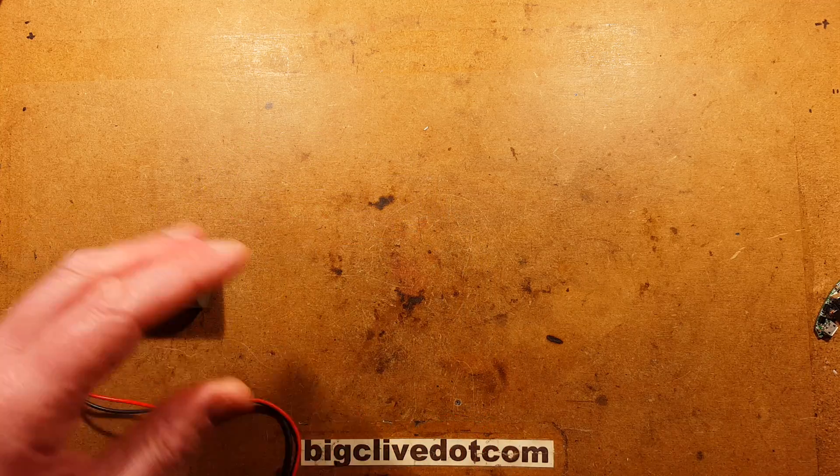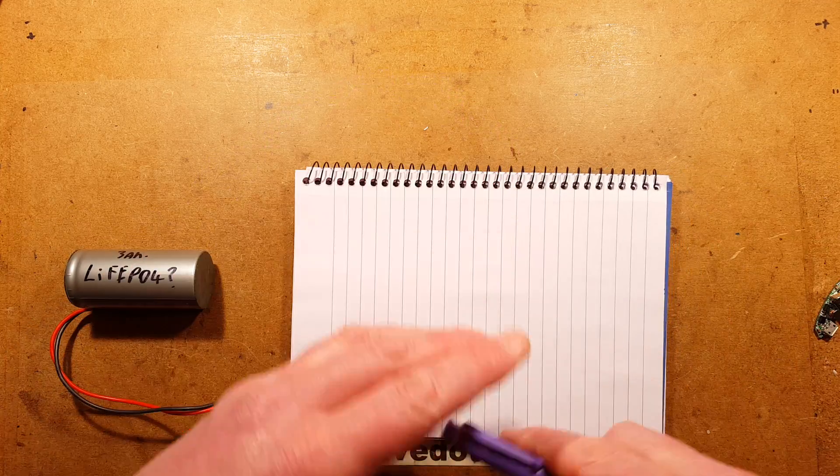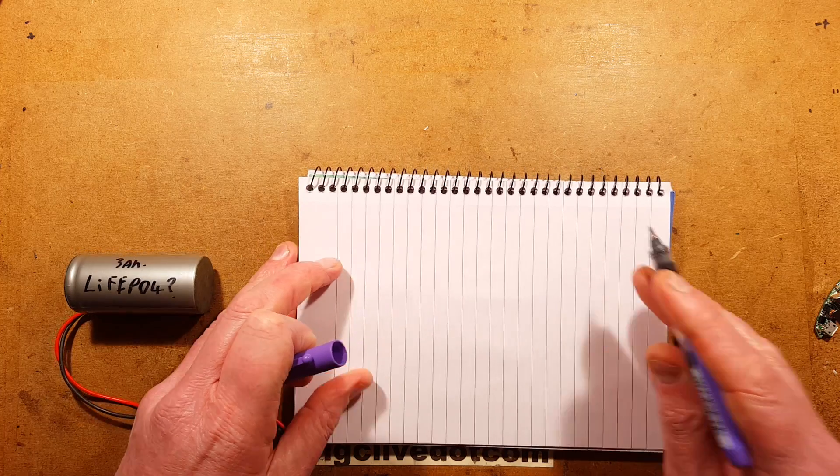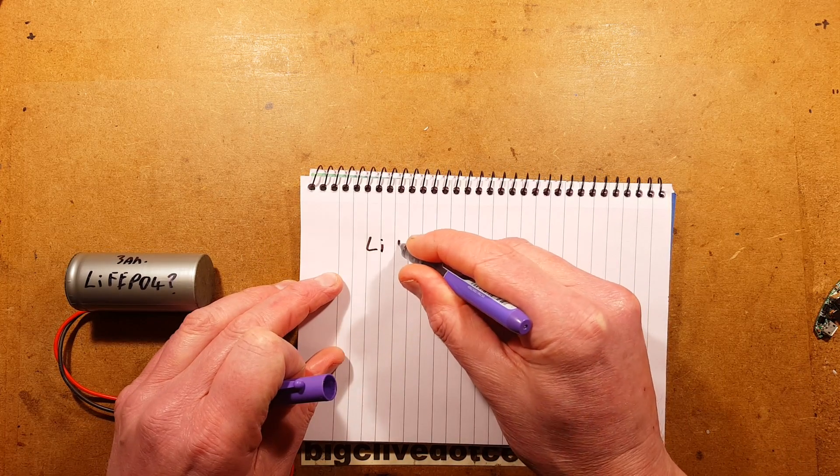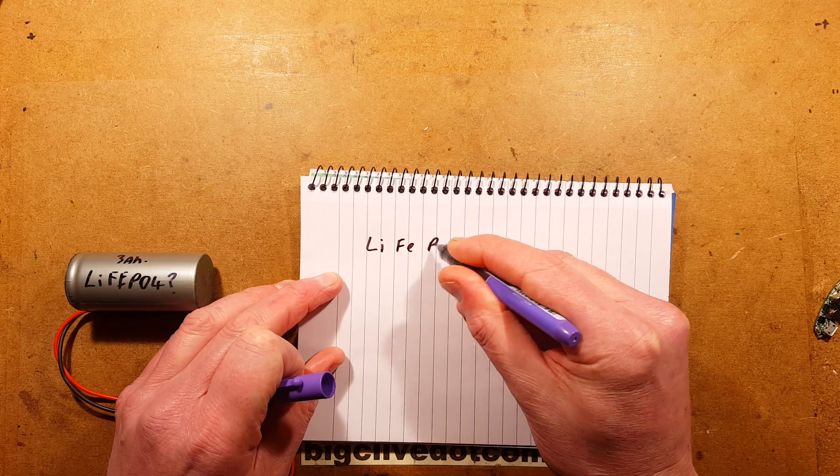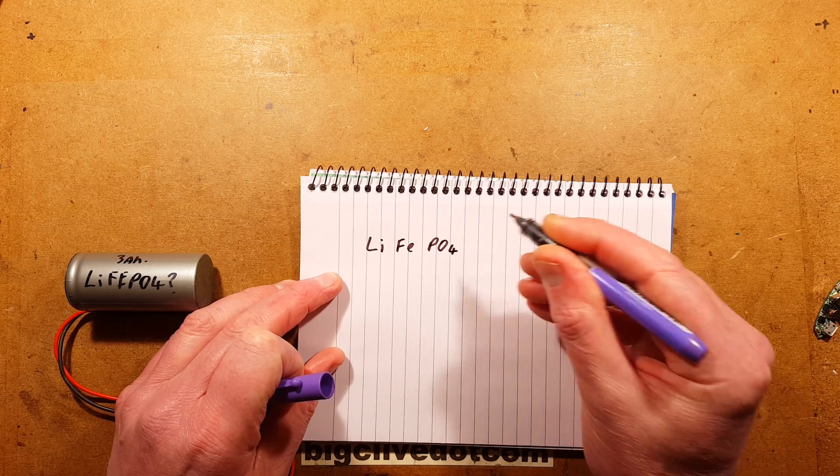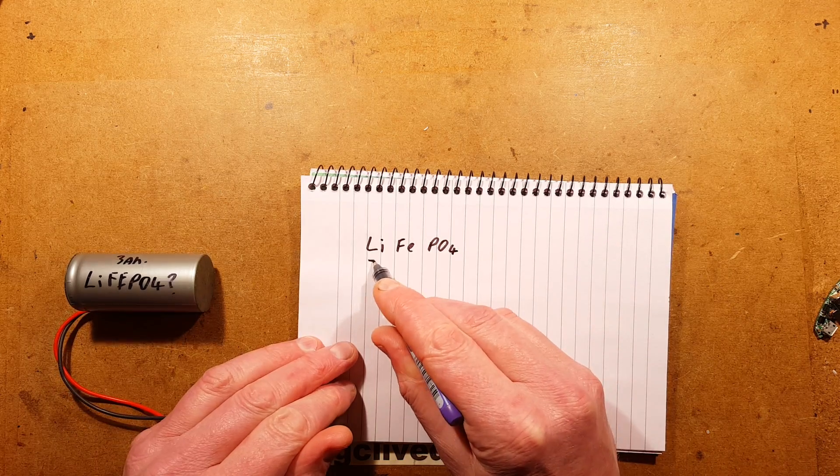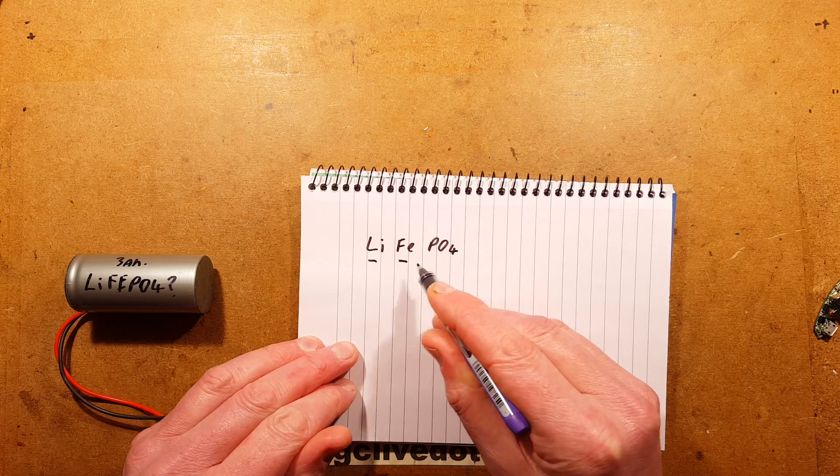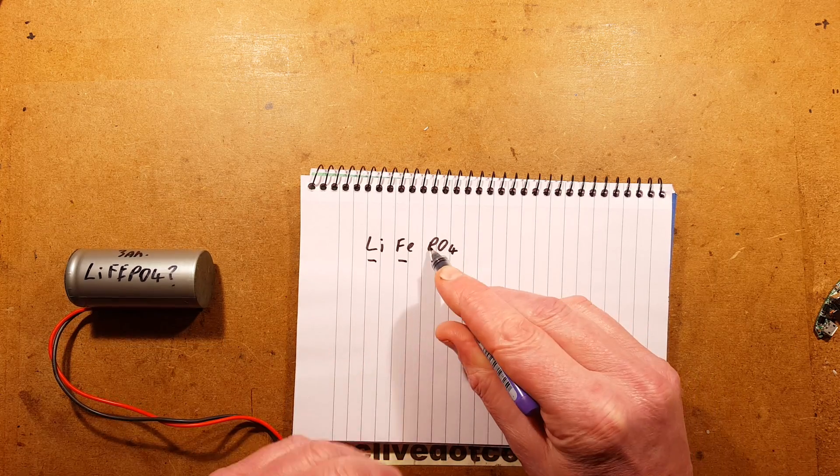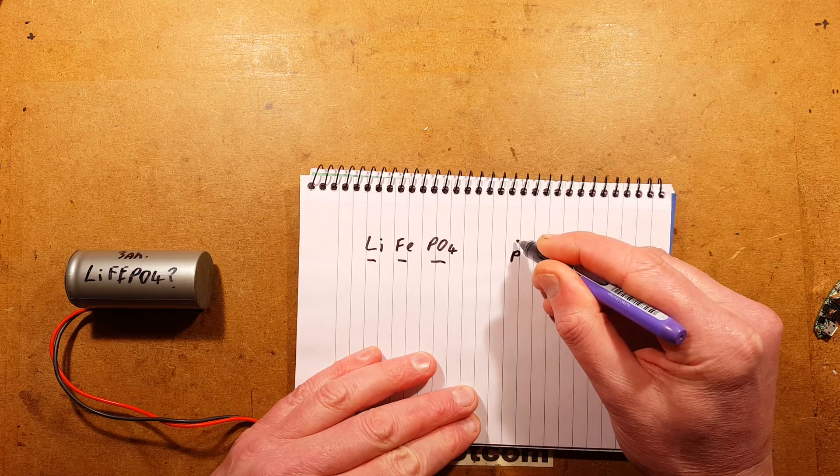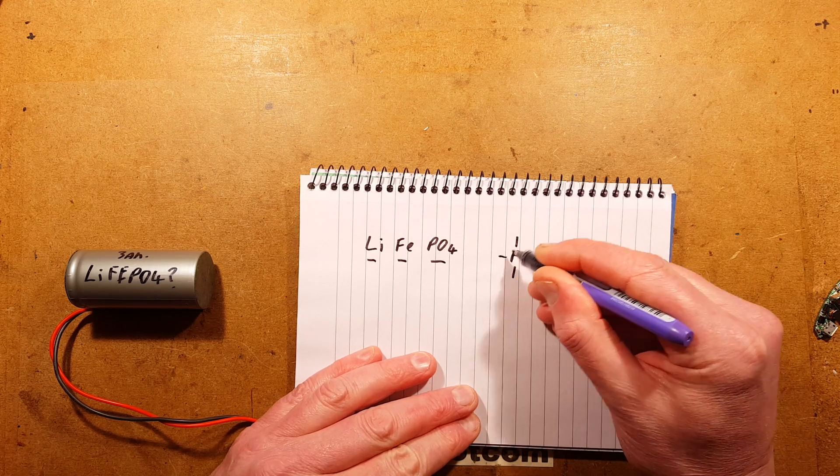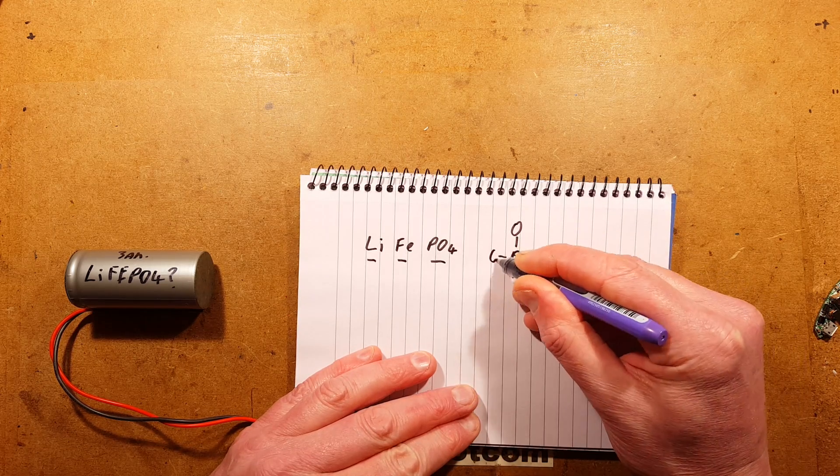So, it is a lithium iron phosphate. Now, this is often described as LiFePO4 with a small 4. And that means lithium iron phosphate, and the PO4 is actually an atom of phosphorus with four oxygen atoms attached to it.